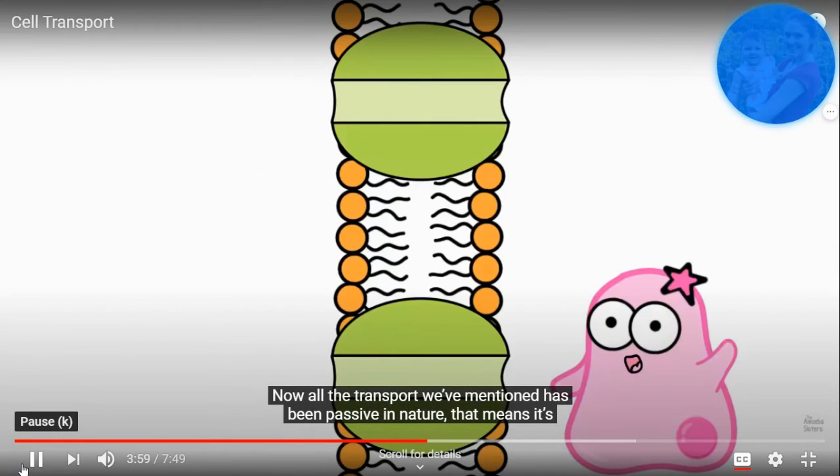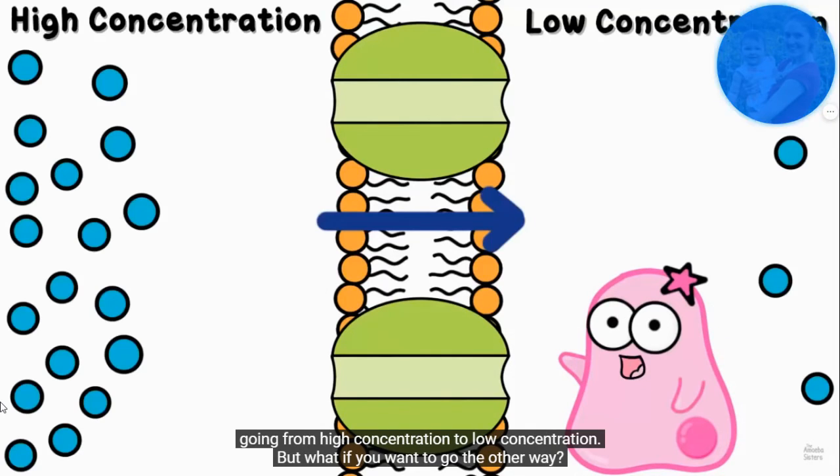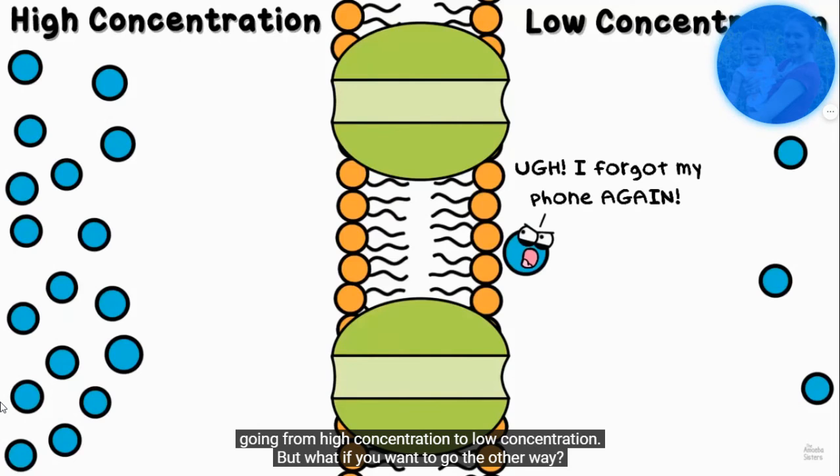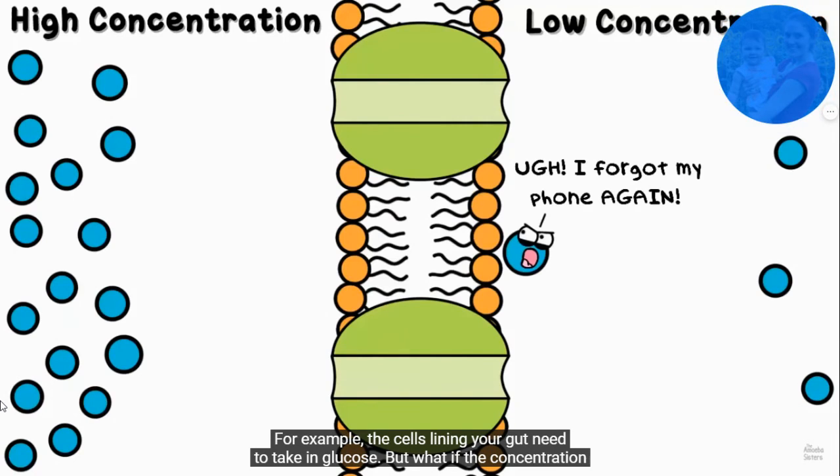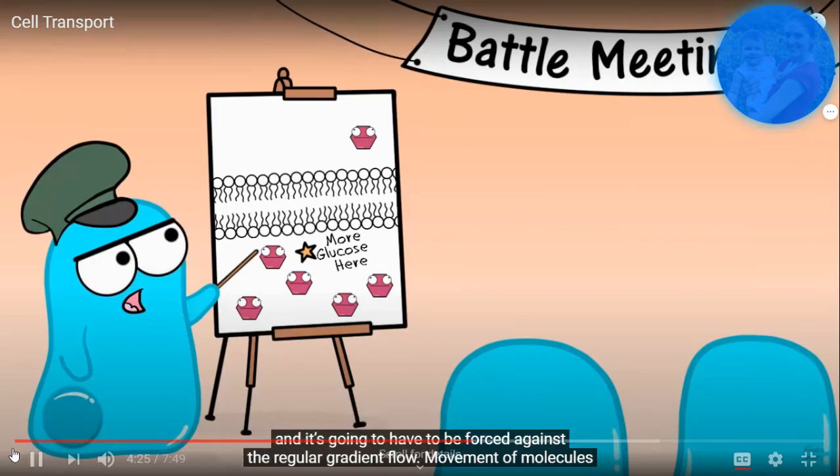Now all the transport we've mentioned has been passive in nature. That means it's going from high concentration to low concentration. But what if you want to go the other way? For example, the cells lining your gut, they need to take in glucose. But what if the concentration of glucose in the cell is higher than the amount of glucose concentration in the environment? We would still need to get the glucose in, so it's going to have to be forced against the regular gradient flow.